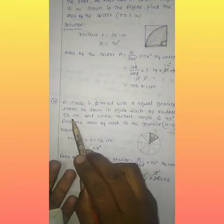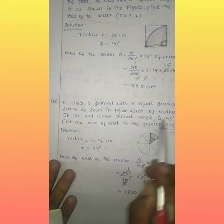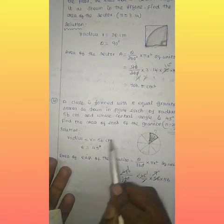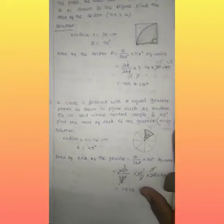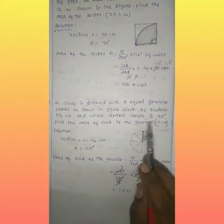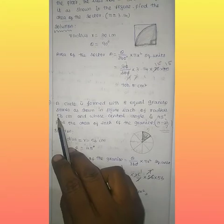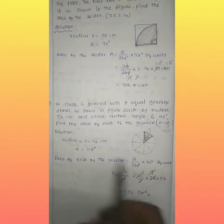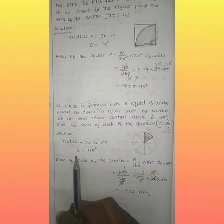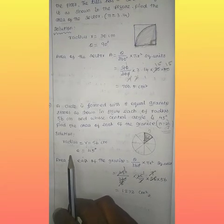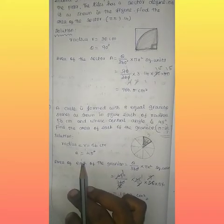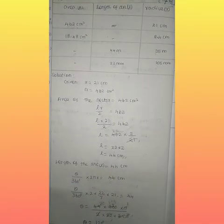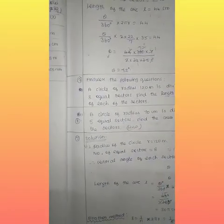Each radius is 56cm and the central angle is 45 degrees. So theta and radius are found. We apply the formula and find it easily. If you understand the formula, it will be easy to solve the sum. So we are done.